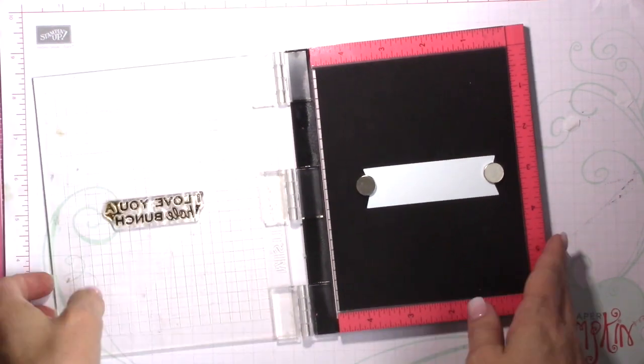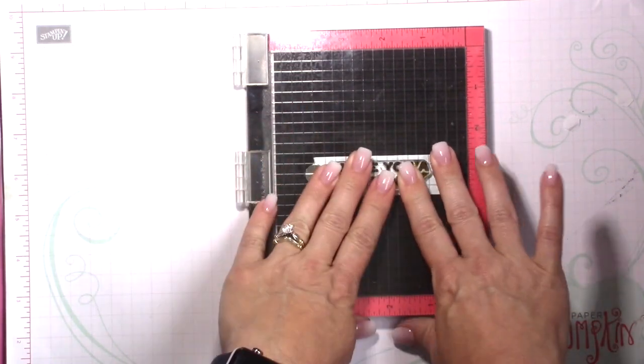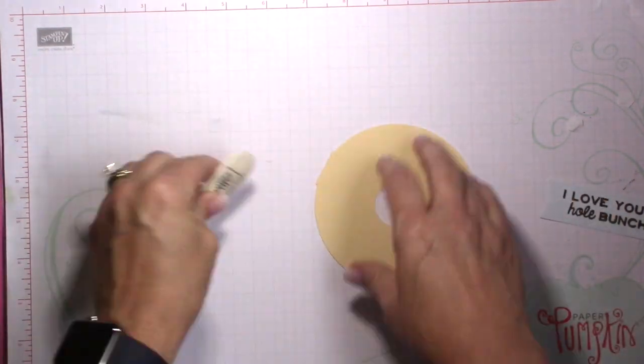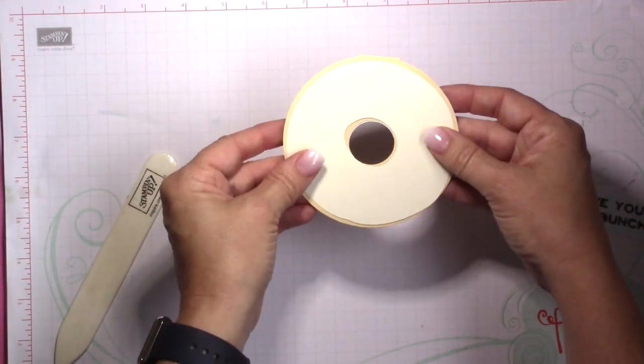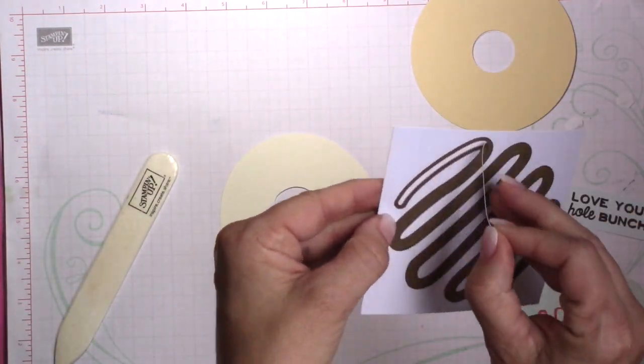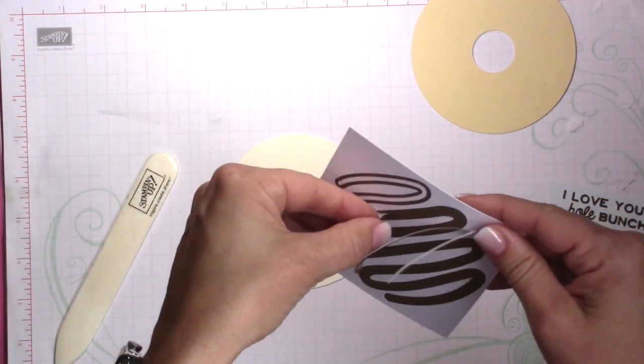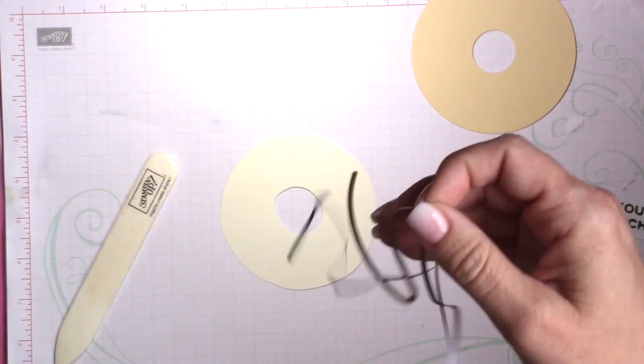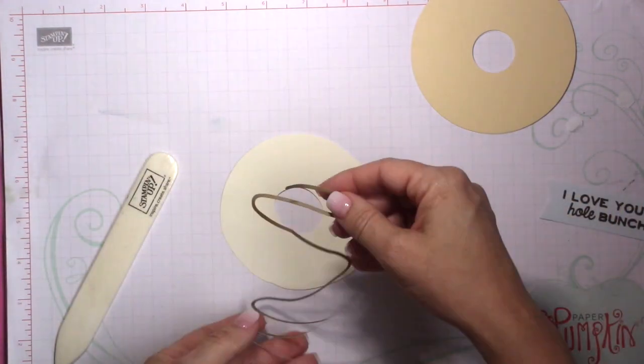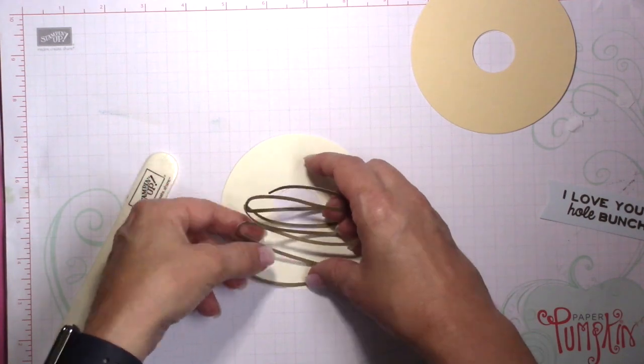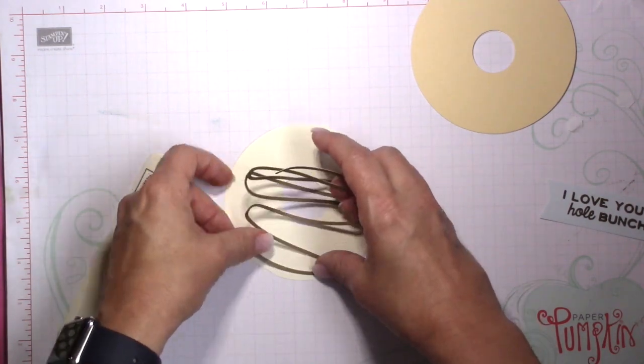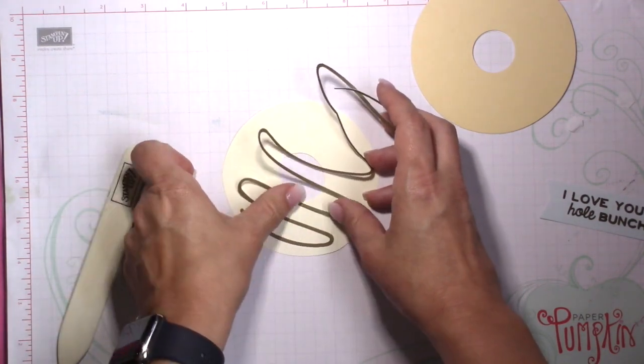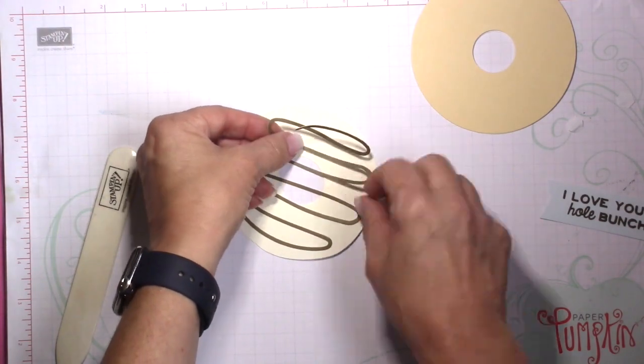So now we're on to this second card, and this card was really fun to make. The designers at Stampin' Up! really did a great job this month with some creative little elements that we get to play with. So that top of the doughnut just goes right on to the card, and then this is some chocolate icing—this is a little cardstock sticker. So I'm just taking it off of the backing sheet and then I'm just going to place this on top of the doughnut.